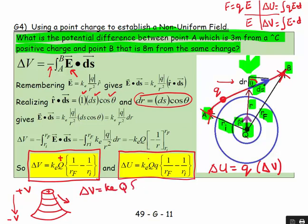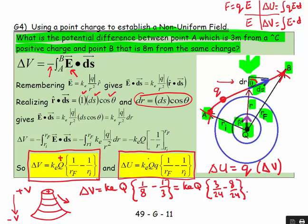I prefer to look at diagrams: I ask myself what is the charge, and if it's positive and I'm going away — starting relatively close at 3m and moving further to 8m — I expect a negative potential difference. So ΔV equals keQ times (1/8 minus 1/3), which gives keQ times (3/24 minus 8/24) equals minus 5/24 keQ volts. This confirms going downhill from a positive charge gives a negative result.